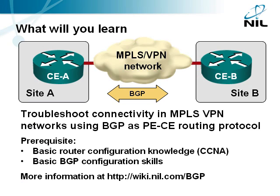In this module you'll learn how to perform basic BGP troubleshooting. The module describes troubleshooting of a two-site network where the sites are connected over an MPLS VPN network and use BGP as the routing protocol between the site router and the service provider network. To understand this module you should have basic router configuration knowledge equivalent to the CCNA certification and basic BGP configuration skills that you can gain through watching other videos in this series. This module covers only the basic troubleshooting techniques.